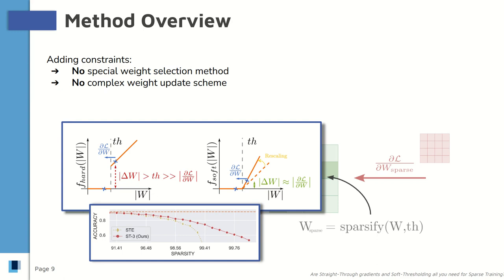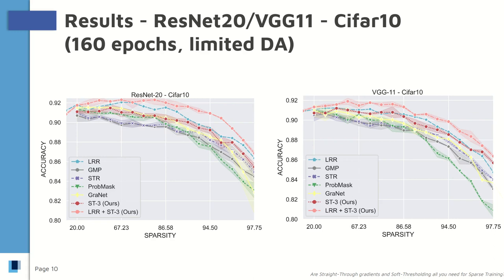And the results speak for themselves. On CIFAR-10, with two different small networks, our method matches every other method. And when we use a recursive method on top of our method — shown as the pink line here — we even beat the previous state-of-the-art, which was based on recursively applying pruning at every step.